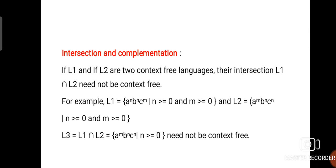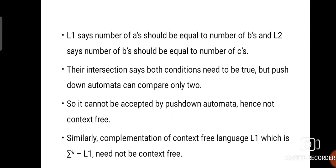Now we consider the properties of intersection and complementation. If L1 and L2 are two context free languages, their intersection L1 ∩ L2 need not be context free. For example, if L1 = {A^N B^N C^M} and L2 = {A^N B^N C^N}, then their intersection L3 = L1 ∩ L2 need not be context free. So CFL is not closed under intersection.